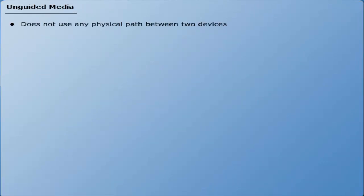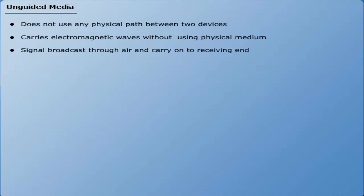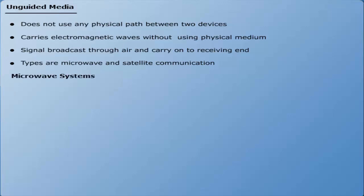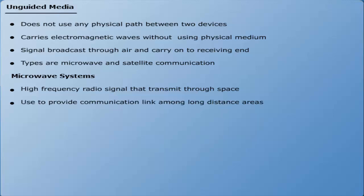Unguided media does not use any physical path between communicating devices. It simply carries electromagnetic waves without using any physical medium. Signals are broadcast through the air to the receiving end. Important types of unguided media include microwave systems and communication satellites. Microwaves are high-frequency radio signals that transmit data through space, used to provide communication links over long-distance areas. Types of microwaves include terrestrial microwaves and satellite microwaves.